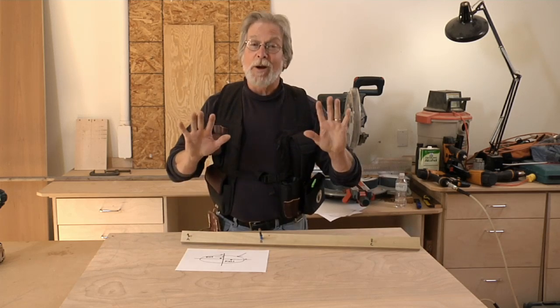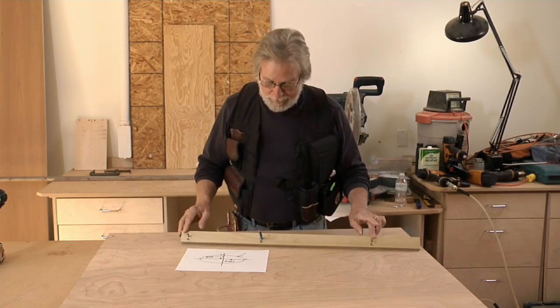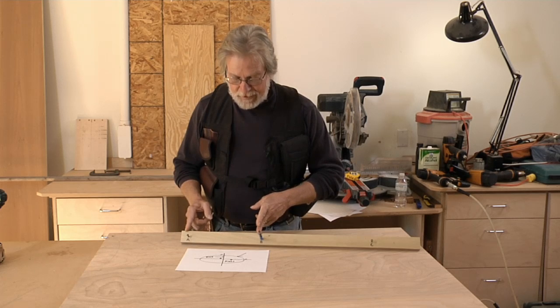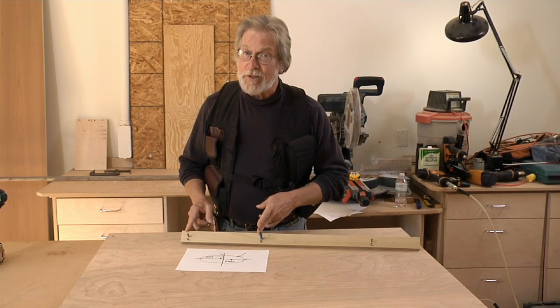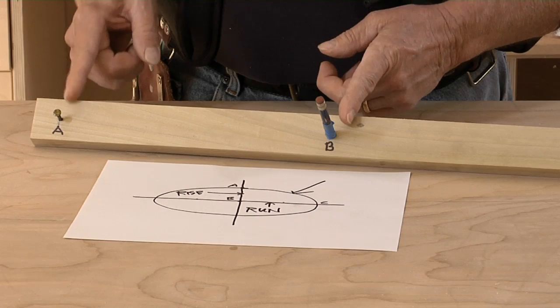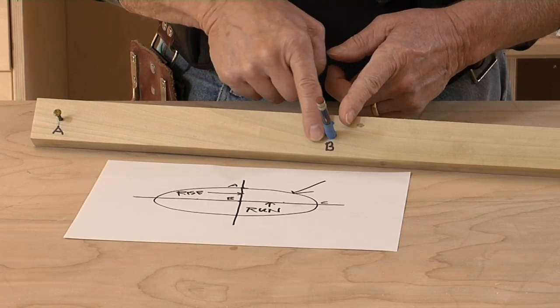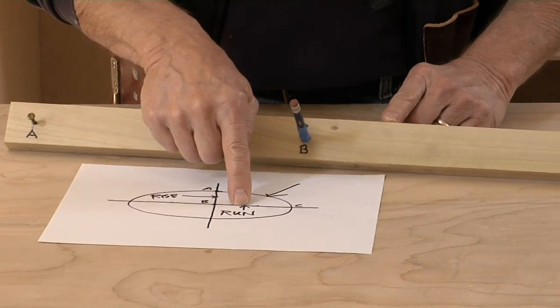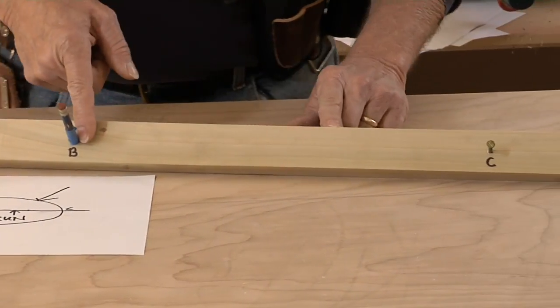So here's our stick, the trammel really. It represents the rise and the run that we just talked about in our drawing. So A-B is the rise, here's A, here's B, that's that distance. And here's B-C, that's the run.